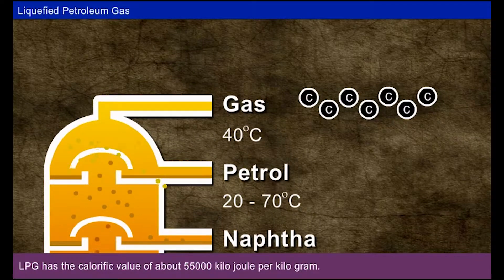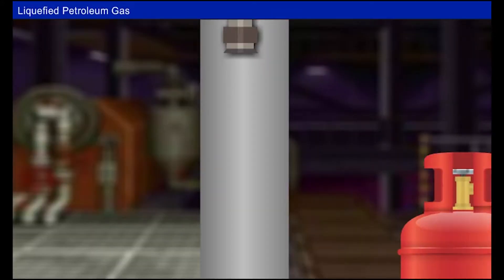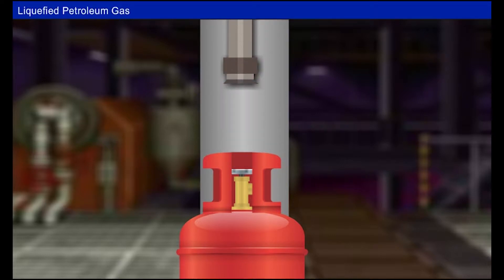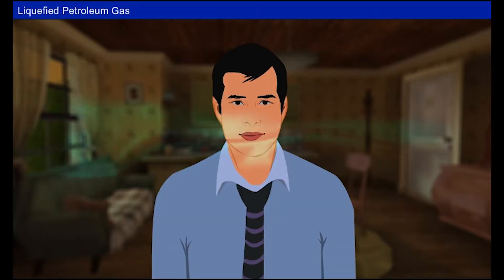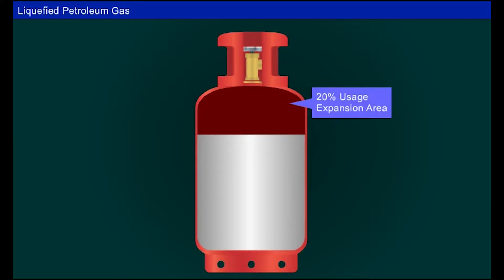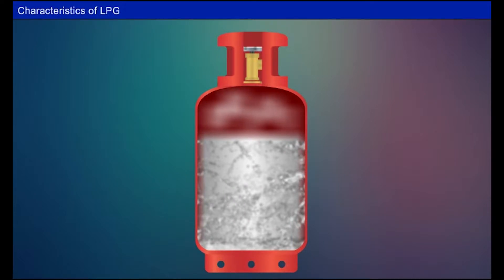LPG has a calorific value of about 55,000 kJ per kilogram. It is a colourless and odourless gas to which foul-smelling mercaptan is added so that leaks can be easily detected. It can easily be liquefied under pressure but exists as gas at atmospheric pressure. LPG expands rapidly when its temperature rises, so whenever a container is filled, sufficient space is left to allow for such expansion. LPG is a gas at atmospheric pressure and normal ambient temperatures.